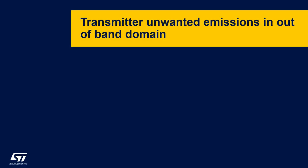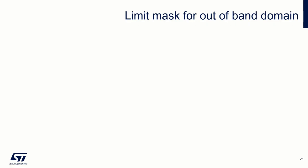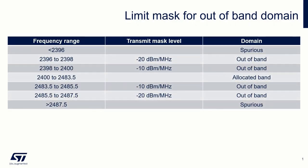We will now deal with unwanted radiation in the out-of-band domain — emissions close to the allocated bandwidth, resulting from the modulation process. It is measured in zero span, meaning in time mode. Before looking at the analyzer settings, we need to understand the ETSI table, which defines two limits depending on the frequency distance from the allocated band.